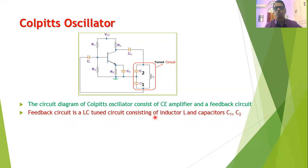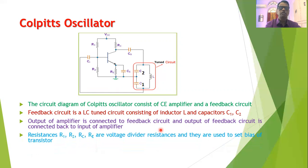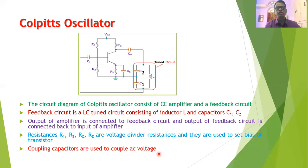The LC tuned circuit consists of inductor L and capacitors C1 and C2. The key difference between the Hartley and Colpitts oscillators is that Hartley uses two inductors and one capacitor, while Colpitts uses two capacitors and one inductor. The amplifier output is coupled back to the feedback circuit and the feedback circuit output is connected back to the amplifier input. Coupling capacitors pass only AC voltage and block DC, and are placed at both the input and output of the amplifier.